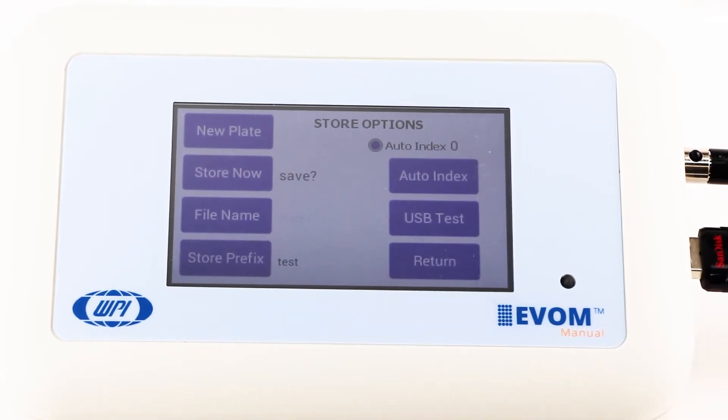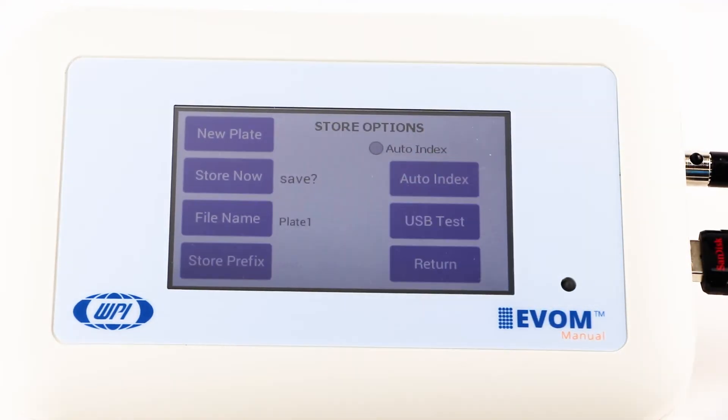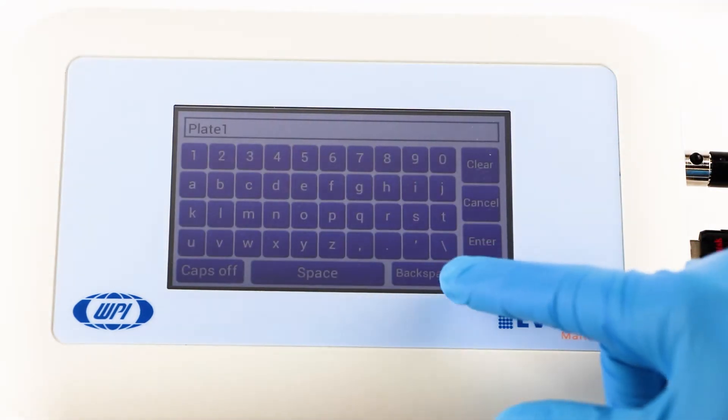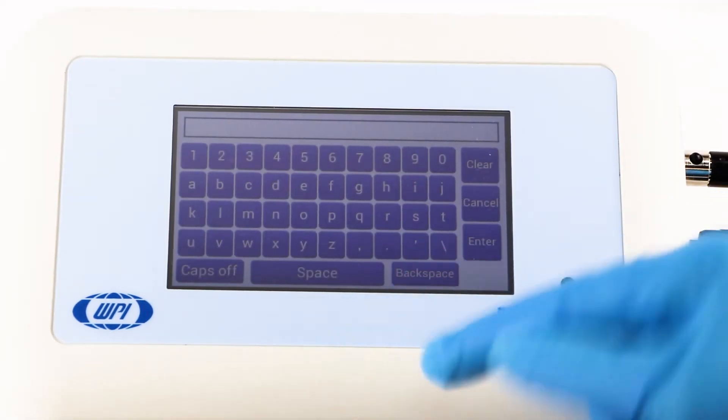Or you can use a unique file name. To do that, deactivate the auto-index radio button and then select file name to enter the name of your file. Press clear, use the keypad to enter a new name, and press enter.